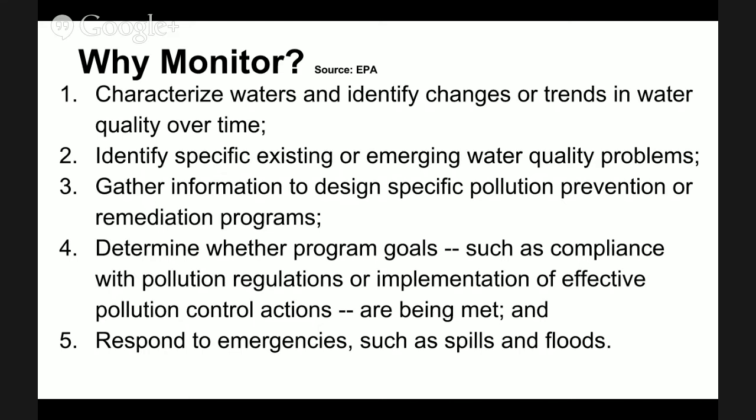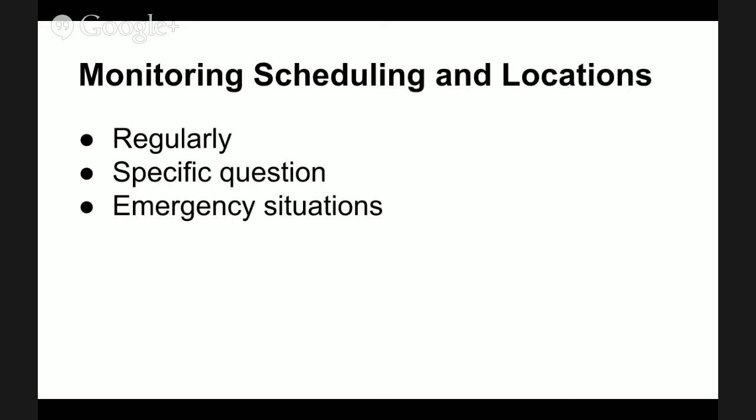To monitor, it can happen on a regular schedule — maybe once a month — at the same location every time, to have longitudinal data and keep track of water quality changes over time, and to detect any changes fairly quickly. Monitoring can also be done to answer a specific question, like whether or not pollution prevention protocols are needed, and also again in emergency situations.